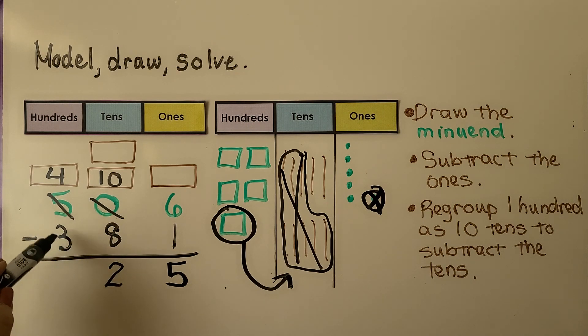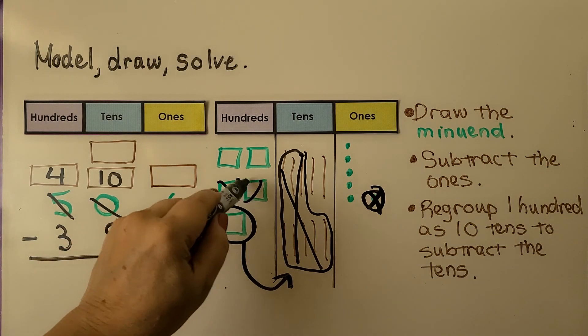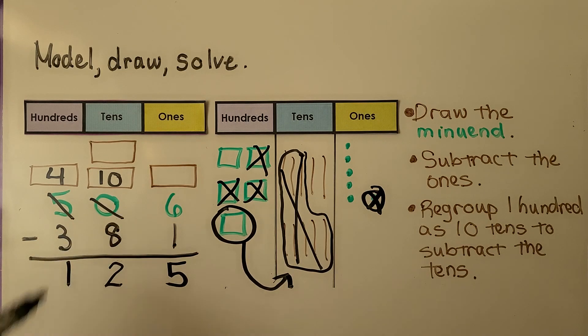We need to take away three hundreds. One, two, three. That leaves one hundred. Our difference is one hundred twenty-five.